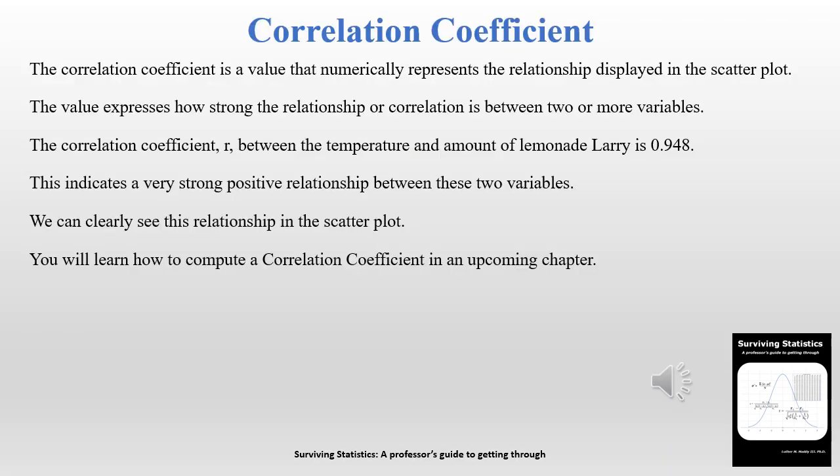The scatter plot allows us to visually see and assume there might be a relationship between two variables — in this case, glasses of lemonade sold and temperature. There's also a numeric formula called the correlation coefficient that we'll cover in upcoming chapters. Just to give a heads up: the correlation coefficient r between those two variables would be 0.948, which is a very strong correlation.